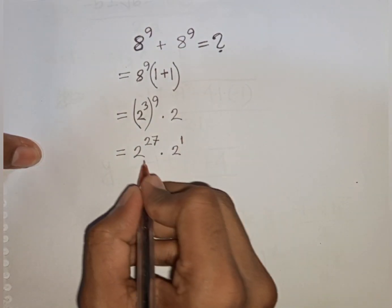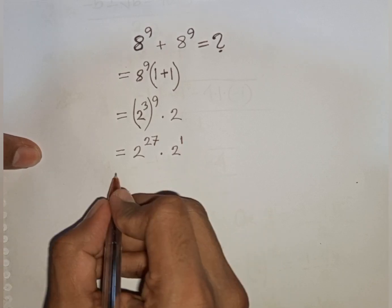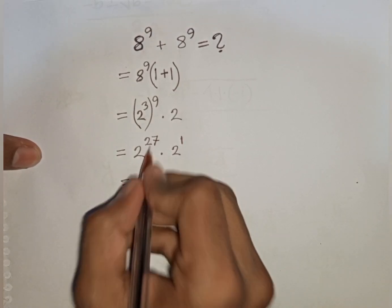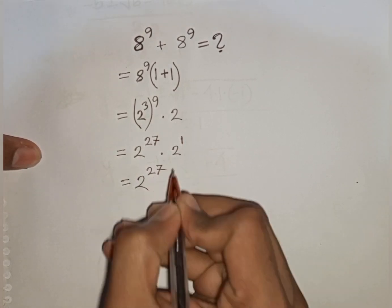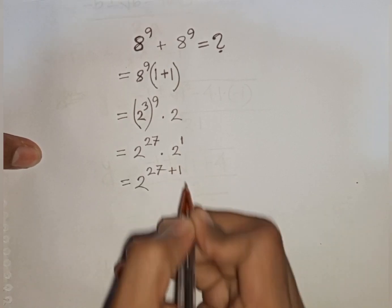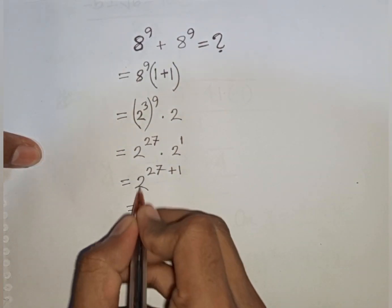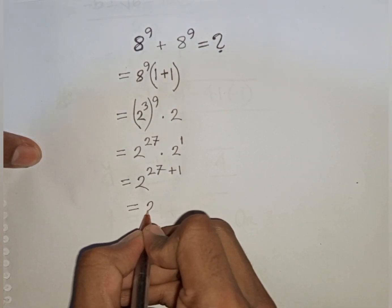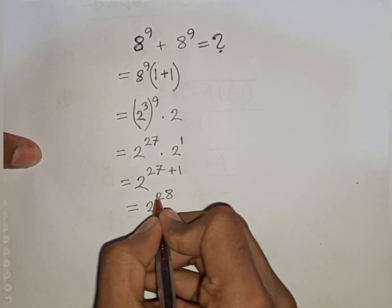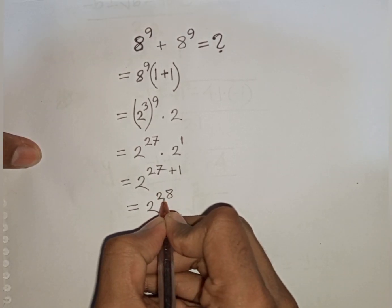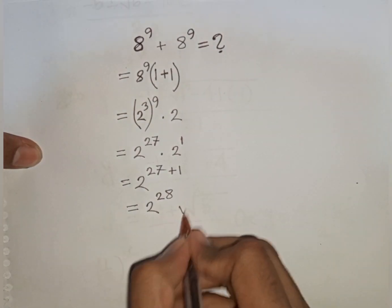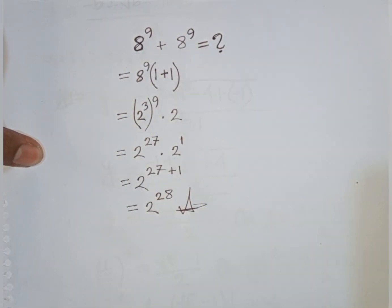We see the same base 2 but different powers, so we add the powers: 2 power (27 plus 1) equals 2 power 28. So 2 power 28 is our final answer.